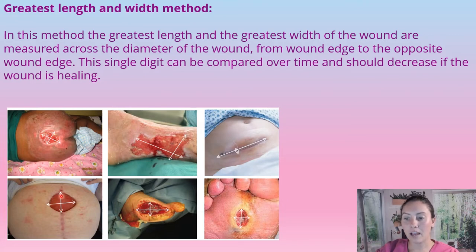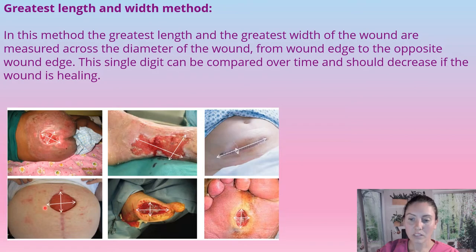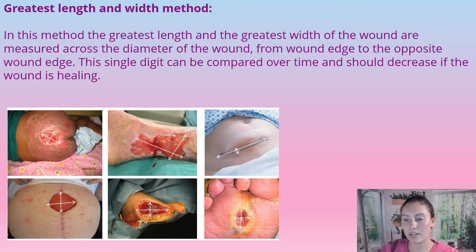It's not always a perfect 90 degrees, but it's pretty close to a 90-degree angle from the length. Sometimes you have to angle it a little bit differently, but it's almost that 90 degrees to find the largest length and the widest width.